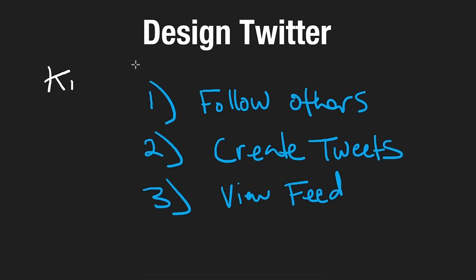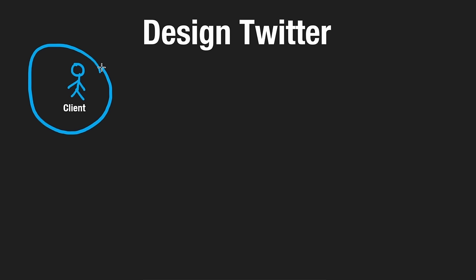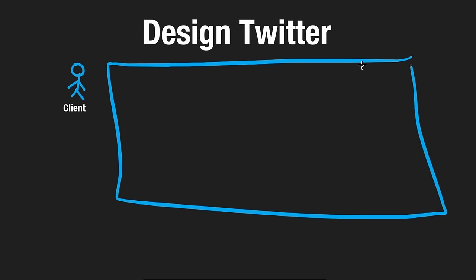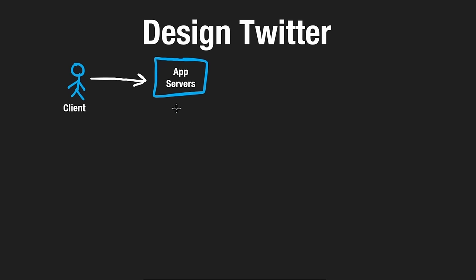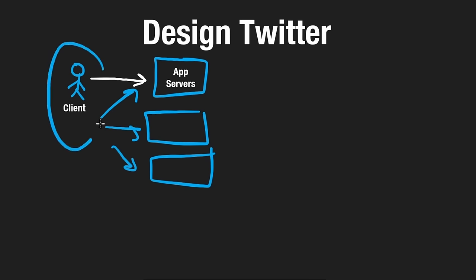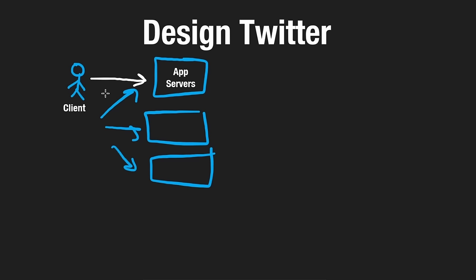Now let's get into the high-level design. Everything starts with our client — whether a computer or mobile device — and we're focusing on the back end. The user first hits the application servers to perform actions like creating a tweet, getting their newsfeed, or following someone. Because of the scale we're dealing with, we're probably going to be bottlenecked by getting the newsfeed. Since these application servers are stateless, it should be easy to scale them horizontally with a load balancer in between — that's fairly straightforward.